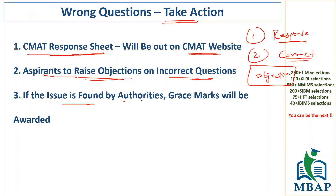Once the issue is found by the authorities and they determine that something has gone wrong from their side, there is a very high chance that you will get grace marks for it. Now, another thing that comes to mind is: what if I did not attempt those questions? That is a clarification the CMAT authorities should give — whether they will give grace marks only for people who attempted the question or also for people who left it. Ideally, if the question is wrong, they should directly give grace marks to everyone in that particular slot, not just those who attempted, because a lot of people might not have attempted it thinking something was wrong.